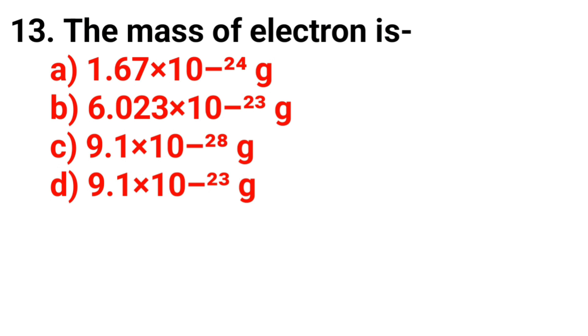Question 13. The mass of electron is. The answer is Option C, 9.12 times 10 to the power minus 28 gram.